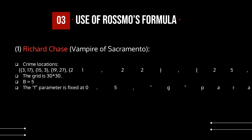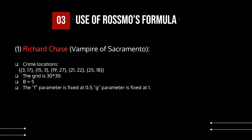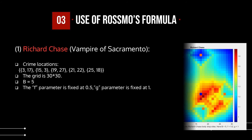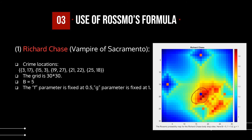The first serial killer caught using this formula was Richard Chase, known as the Vampire of Sacramento. You can see the use of a matrix, the crime locations, the buffer radius, and the empirically tuned parameters f and g. Variation in f and g changes the stiffness of the decay curve before and after the buffer radius. By entering all these details into the model, the hotspot of the criminal's residence is found.